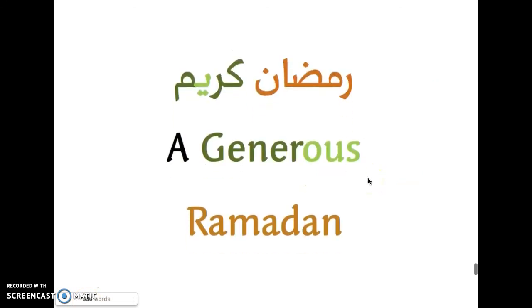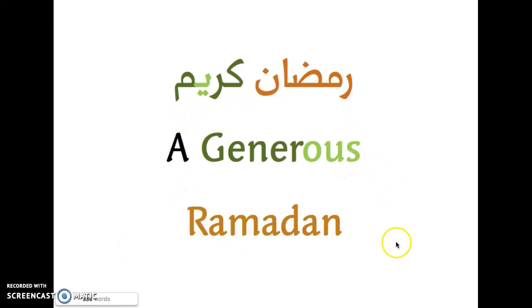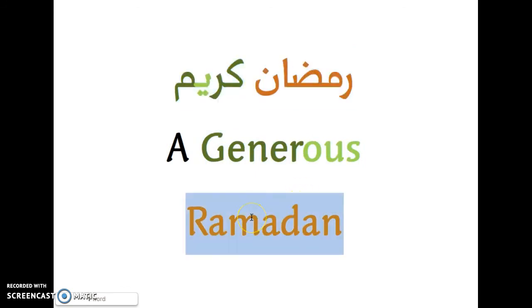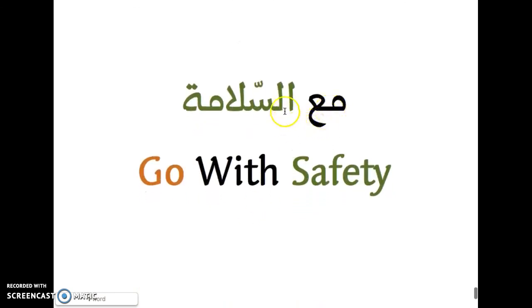Before we go — this might be different — I might not see you before Ramadan, so we always say رَمَضَان كَرِيم — a generous Ramadan. You know what كَرِيم means from the attributes we've studied: generous. We're giving the attribute كَرِيم to Ramadan. As usual, مع السلامة.